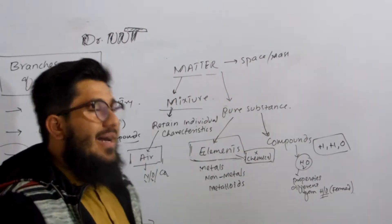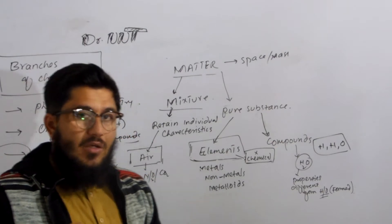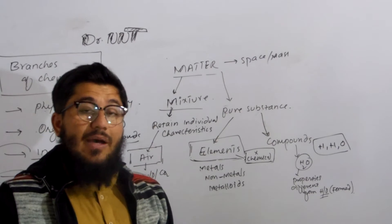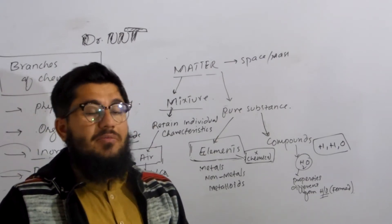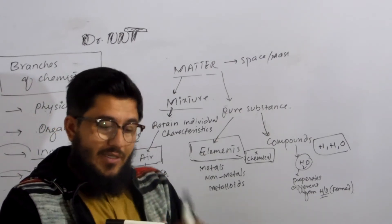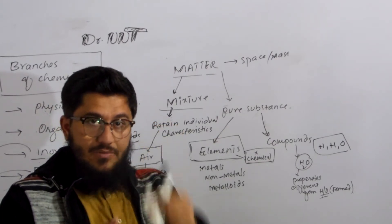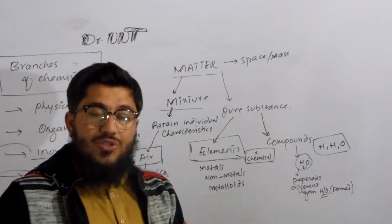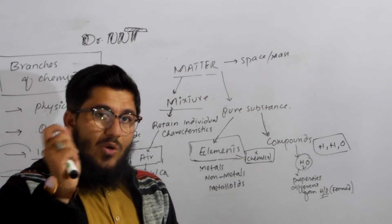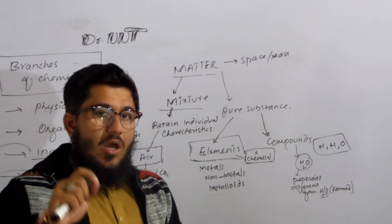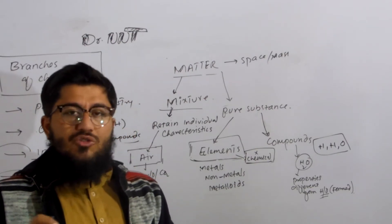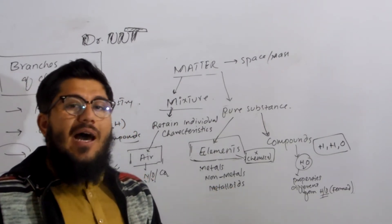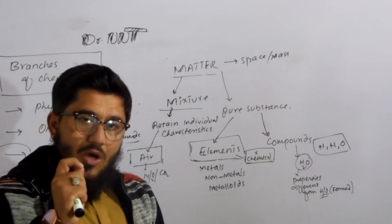What is matter? How do we define matter? Anything that occupies space and has mass is known as matter. Occupies space and has mass. The same is the case with chemicals like oxygen — they do have mass. When we go in depth, elements like carbon, hydrogen, oxygen, nitrogen, phosphorus, sulfur, etc. — every single element has a mass and occupies space.